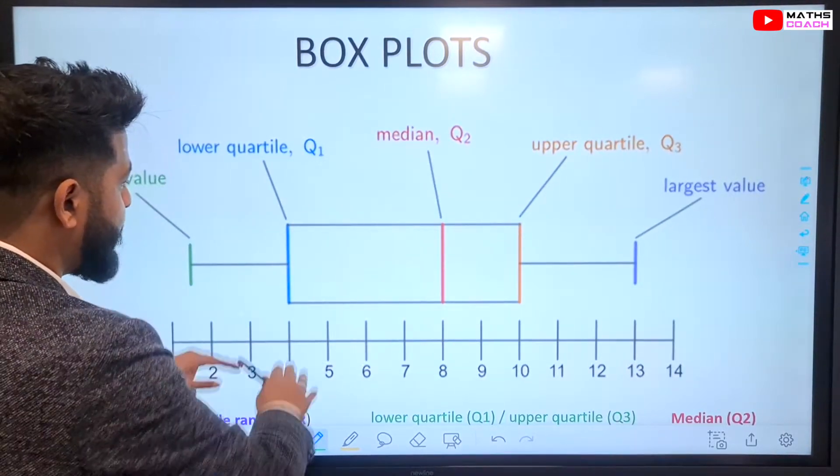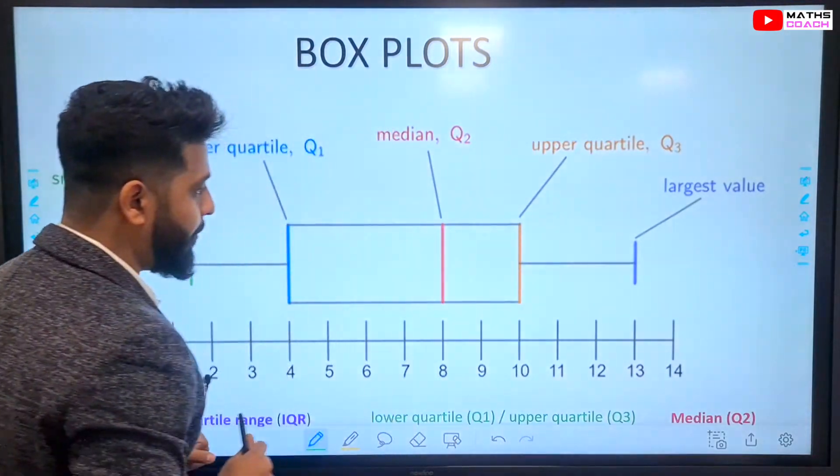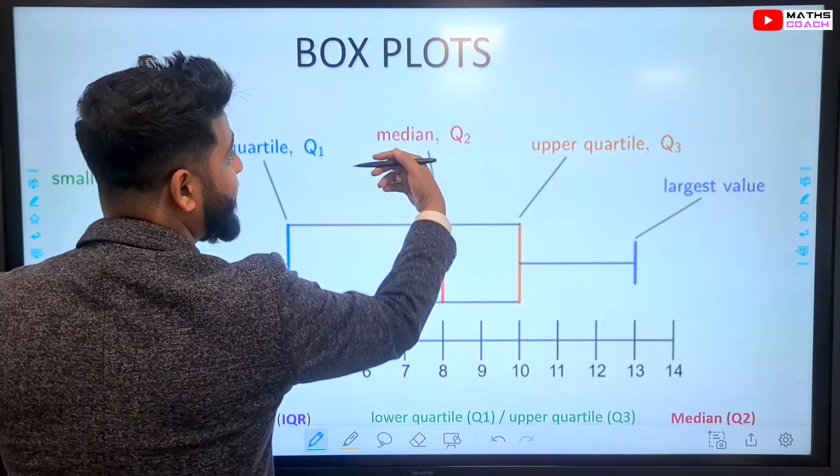This is what the box plot looks like. You've got the main box here, the rectangle, and you've got these two parts coming out. Now, the part in the middle right here is our median, which is our 50% mark.